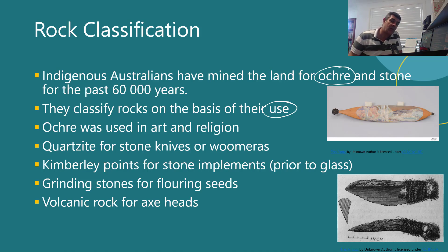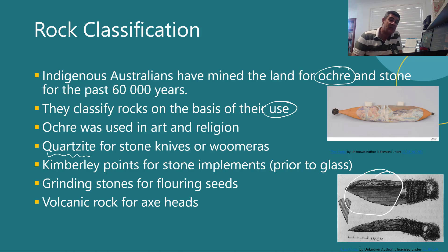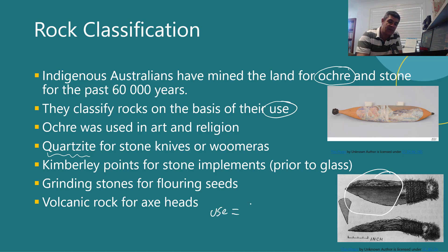Some of the different types of rocks found from ancient sites include quartzite, which was used in stone knives — like the one you can see here — and also for woomeras. Kimberley points were also used for stone implements, and have subsequently been replaced by shaped glass. Different types of grinding stones were also used to turn seeds into a type of flour. Volcanic rock was also favoured for use as axe heads. So there was a large range of rocks and minerals available, and they were put to fantastic use — the use itself being the basis for the classification system.